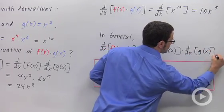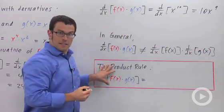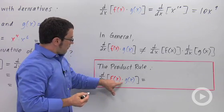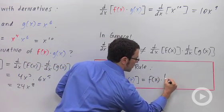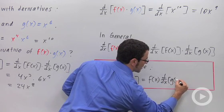So what is it? Well, what it is, is the product rule. The derivative of f of x times g of x is the first function, f of x, times the derivative of the second function, g of x.